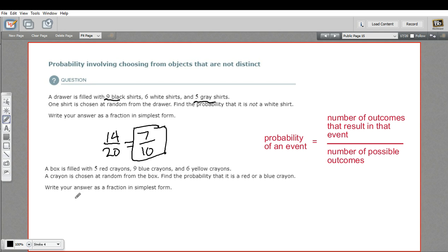Let's look at this second one. It says a box is filled with five red crayons, nine blue crayons, and six yellow crayons. A crayon is chosen at random from the box. Find the probability that it is a red or a blue crayon.